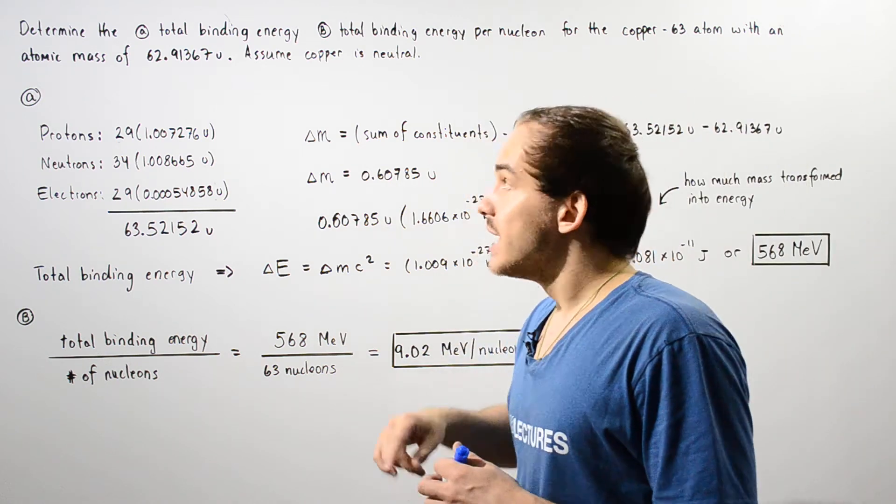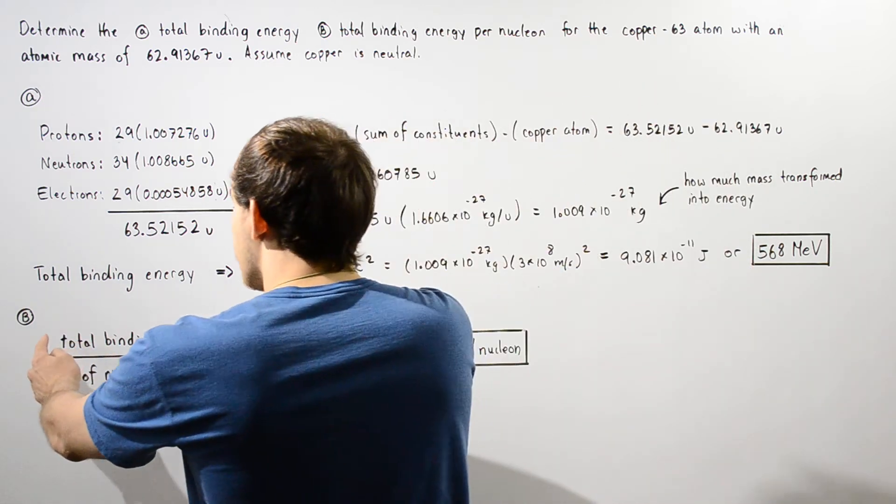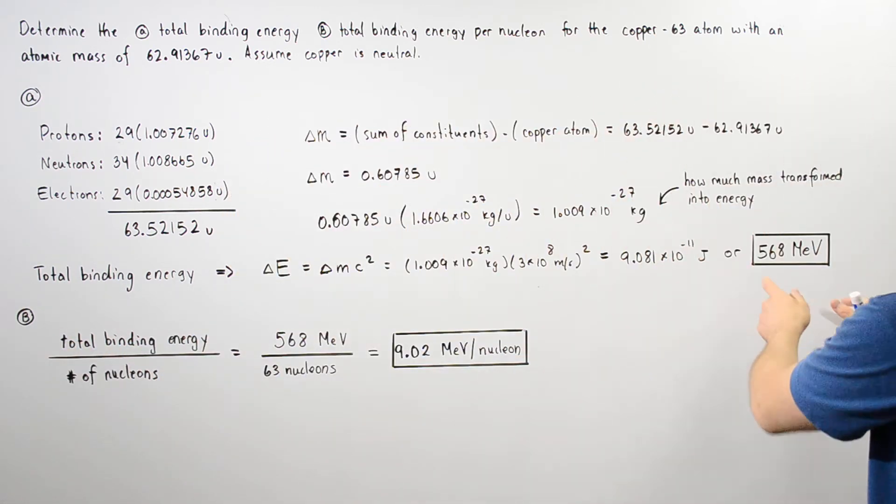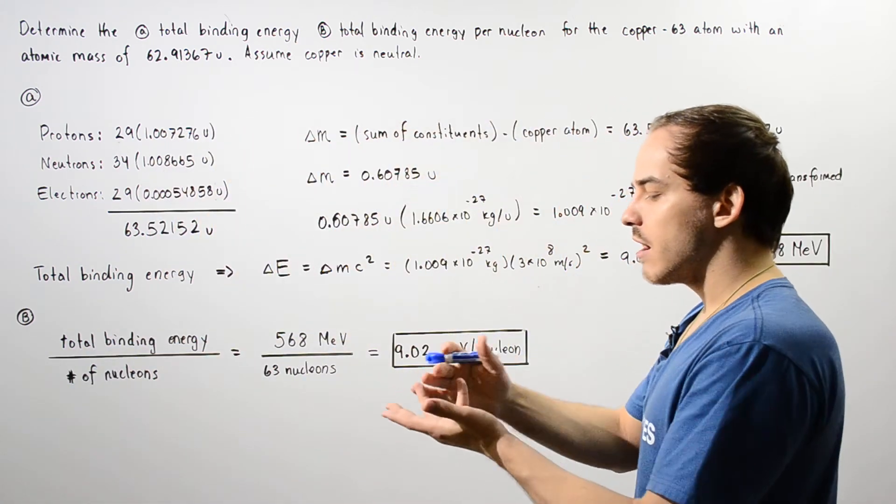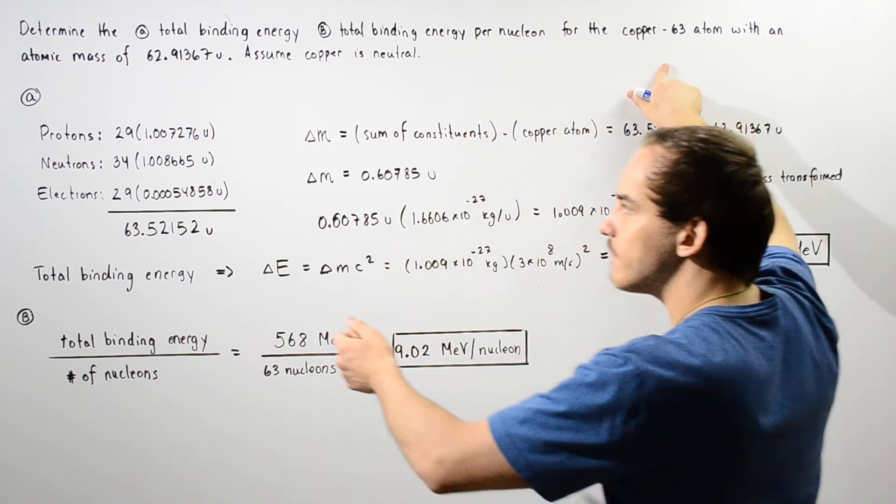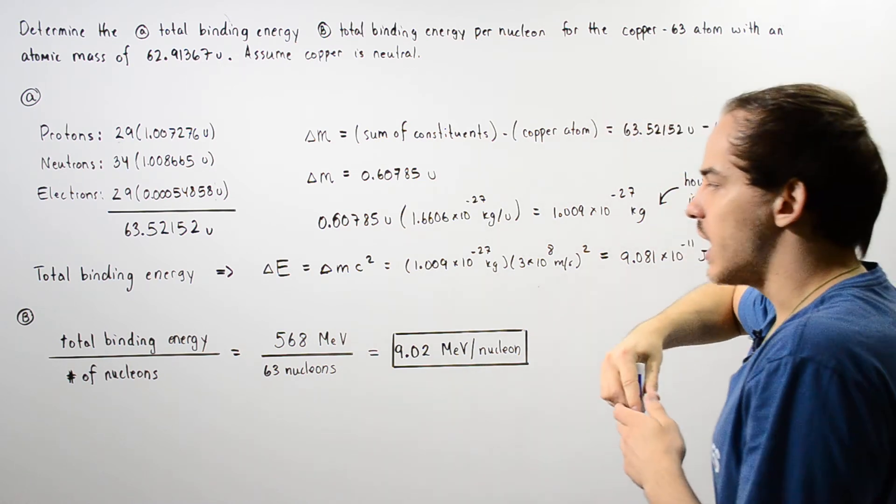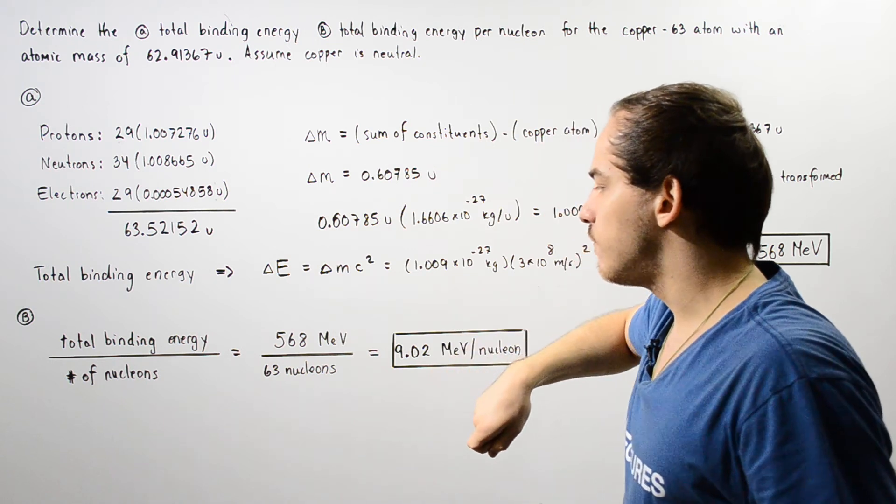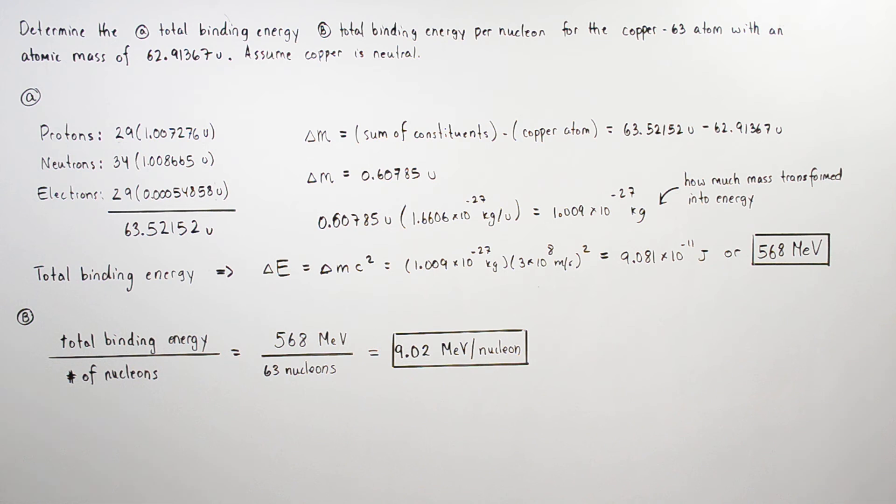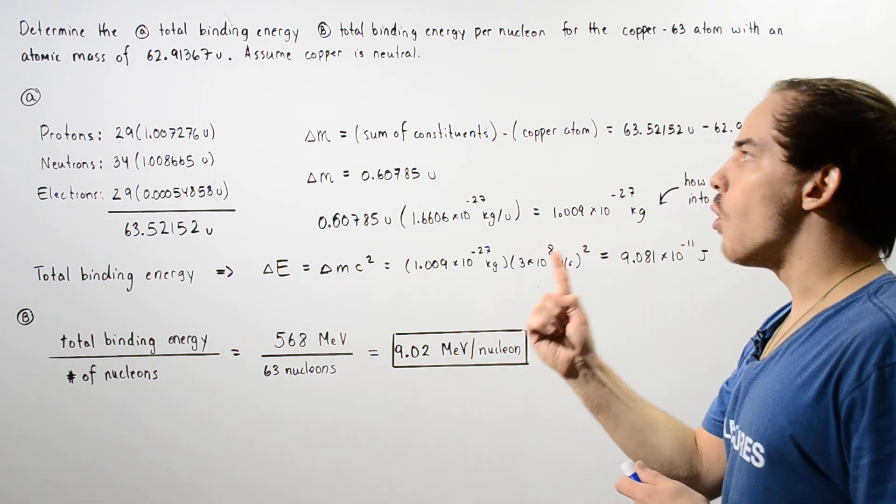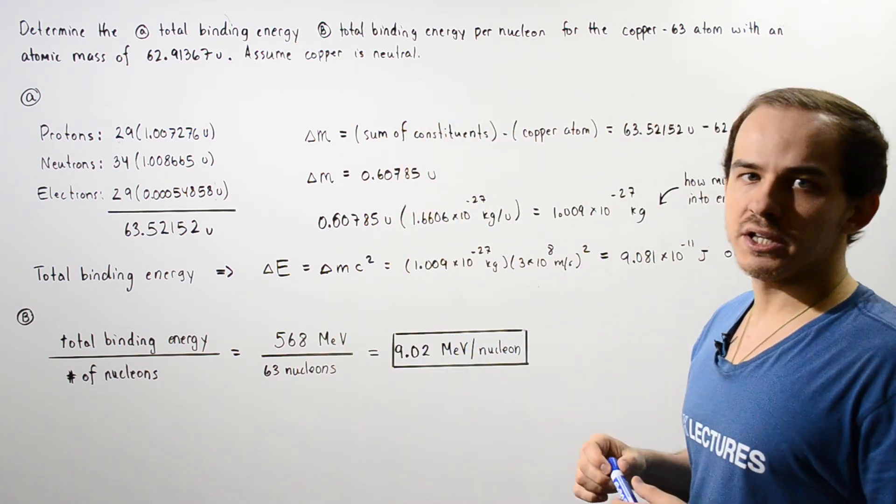Now let's move on to part B. To find the total binding energy per nucleon, we basically take the total binding energy we calculated in part A and divide that by the total number of nucleons, which is the sum of the protons and neutrons. We have 34 neutrons and 29 protons, which gives us 63 nucleons. So 568 mega electron volts divided by 63 nucleons, we get about 9.02 mega electron volts per one nucleon is the total binding energy that is released per nucleon.